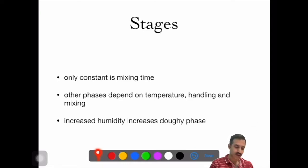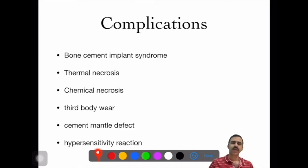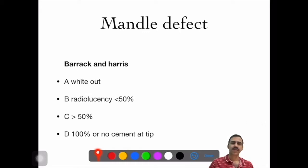What are the complications of using bone cement? An often-asked question is bone cement implantation syndrome. Then you have thermal necrosis, chemical necrosis, third body wear, cement mantle defects, and hypersensitivity reactions. If you've heard about a mantle defect, Barrack and Harris classified it into A to D. A means complete white-out—no mantle defect. D means complete black-out, no cement at the tip, or 100% absence of cement. B and C are in between. If radiolucency is less than 50%, it's B. If more than 50%, it's C.